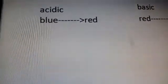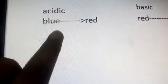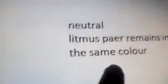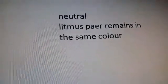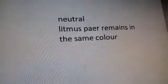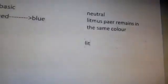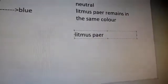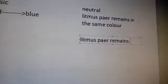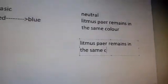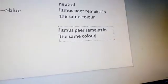In an acidic solution, the blue litmus paper turns red. In a basic solution, the red litmus paper turns blue. In a neutral solution, the litmus paper remains the same color.